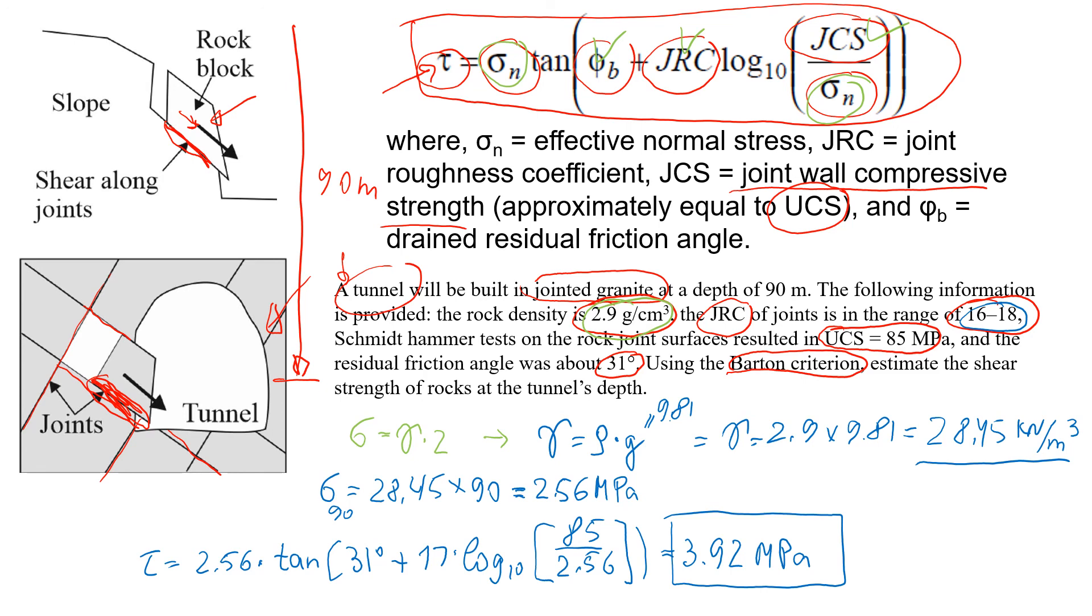In that case we will need to consider the groundwater level when we estimate normal stress, so we have to deduct the value of water pressure. But in this case it was pretty dry rock mass and the answer is 3.92 MPa. So I believe now you have a better idea how to estimate the shear strength of a jointed rock mass using Barton's criterion. Thanks for watching this video and have a nice day, bye.